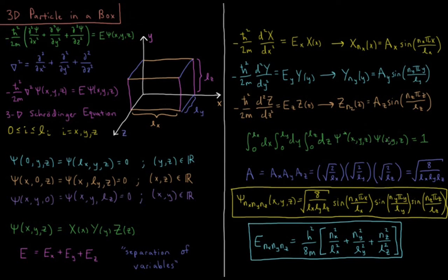So psi star psi is still the same. We're just integrating over three dimensions now. The probability that the particle is at this specific location, integrated over all locations, should equal 100% or a probability of 1.